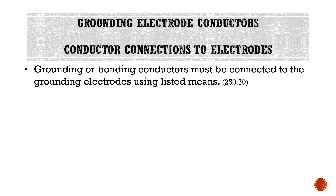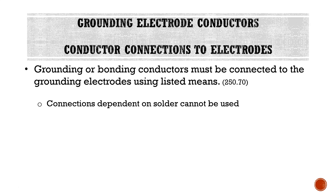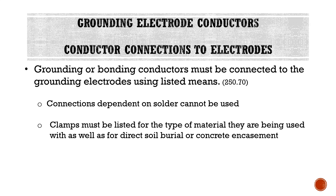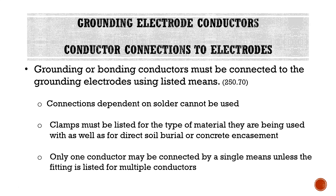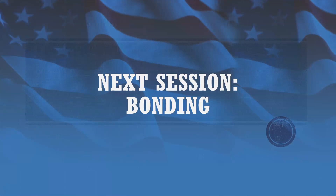Looking at our connections to the electrodes themselves: grounding or bonding conductors must be connected to the grounding electrodes using listed means. Connections dependent on solder cannot be used. Clamps must be listed for the type of material they're being used with, as well as for direct soil burial or concrete encasement, as applicable. Only one conductor may be connected by a single means unless the fitting is listed for multiple conductors. Essentially, if we're connecting a grounding electrode conductor to a grounding electrode, we have to use a connection means listed for that type of connection. That wraps up this lecture — in our next session, we're going to be taking a look at bonding.